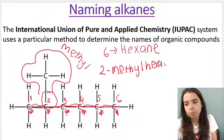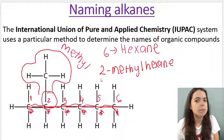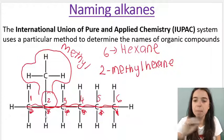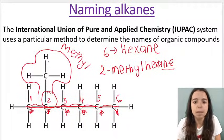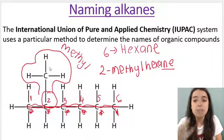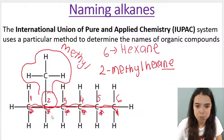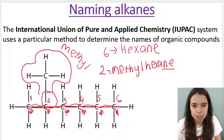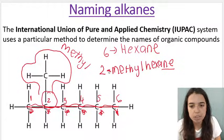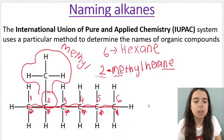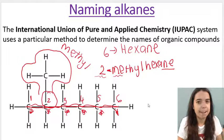Now very important — have I included everything in the name? Yes. I told everyone the main chain is six carbons, it's an alkane because it ends in ane, methyl indicates this group with one carbon, and the methyl group is on carbon number two. When it comes to punctuation: dashes separate numbers and letters, while commas separate numbers from numbers. I have an example of that coming up.